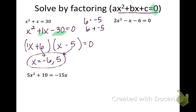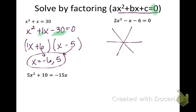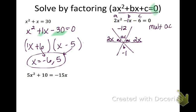For the next one, we do have a number other than one for our a value — we have a two. So we cannot use that trick; we have to actually do the star method. We put a times c in the top part: two times negative six is negative twelve. b is negative one and goes at the bottom. We put ax on these lines, so two x and two x. These are a, b, and c. Now I still have to find the factors that multiply to negative twelve — my a times c — and add to negative one, my b.